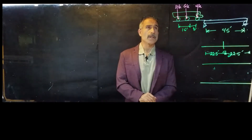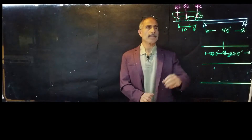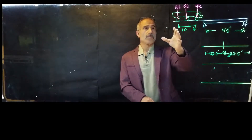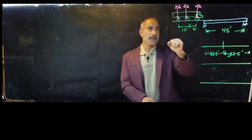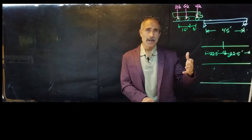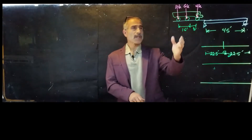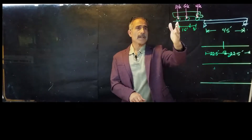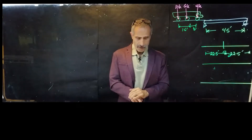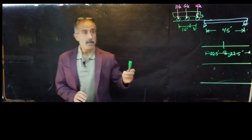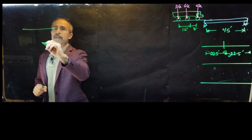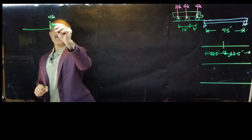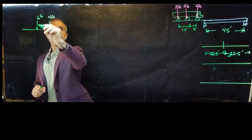Welcome back to another lecture. Here we want to calculate the absolute maximum moment in this girder or beam bridge for a moving vehicle with this type of loading going over the beam. The front axle has 4 kips, the second has 6 kips, and the last axle has 10 kips.